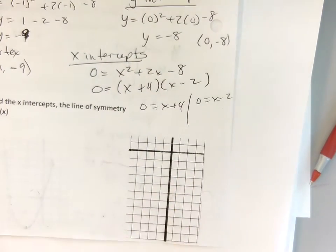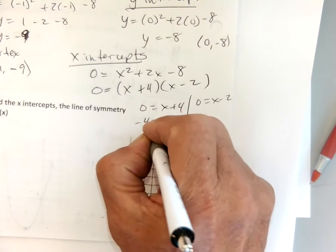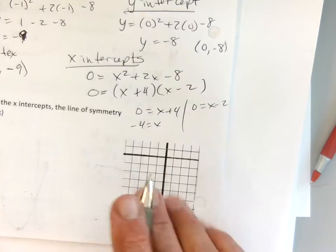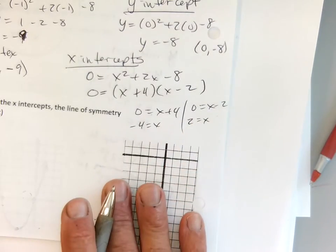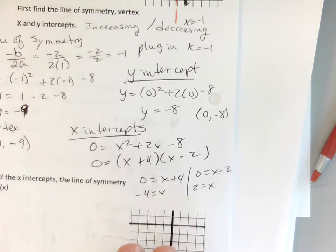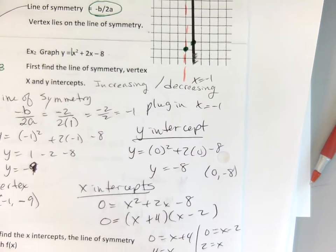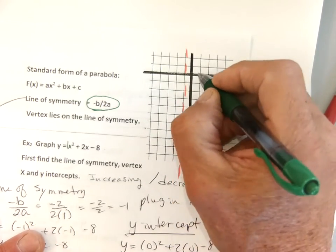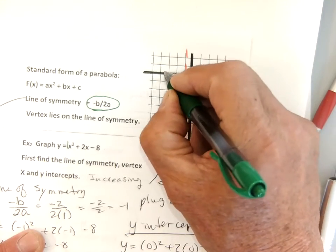That's easy to solve: minus 4, minus 4 — one x-intercept is at negative 4. Plus 2, plus 2 — the other x-intercept is at 2.